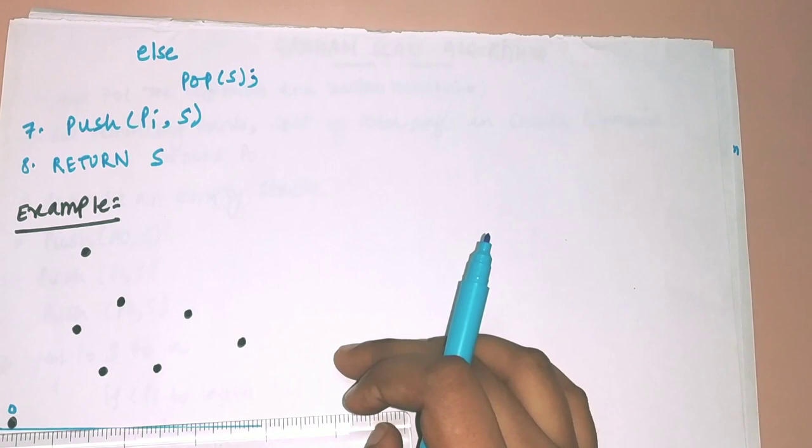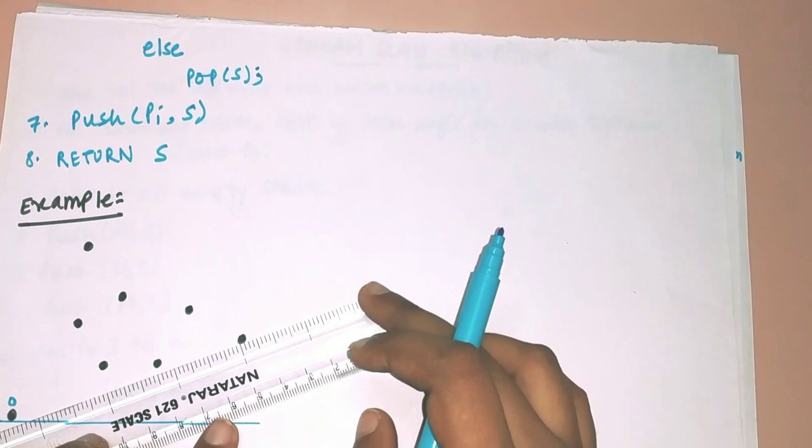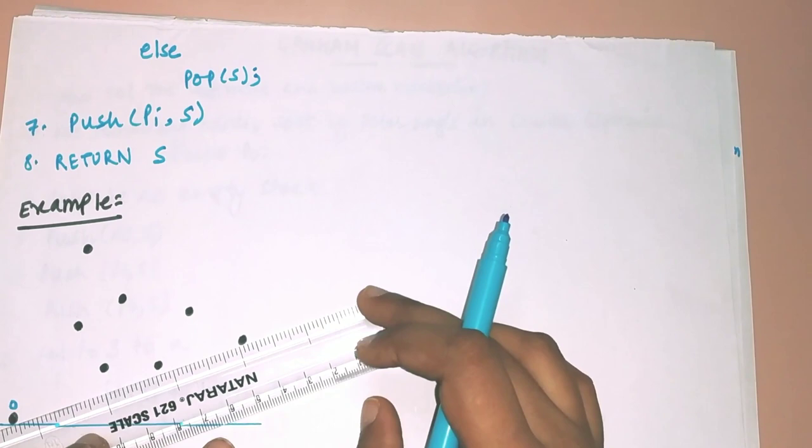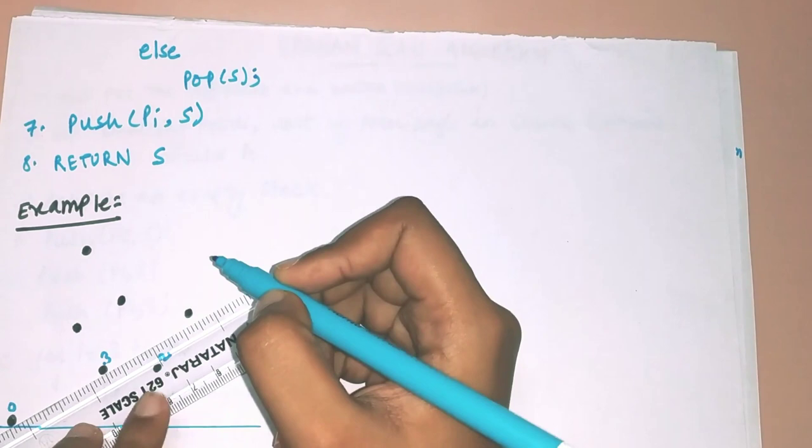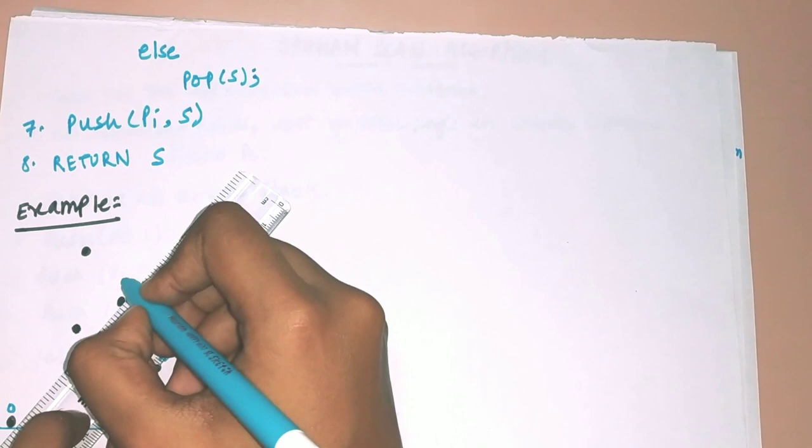We draw an x-axis along p0 and make that point our origin. For step 2, we sort the remaining points by polar angle in counterclockwise direction. Place a ruler along the x-axis at p0 and rotate it counterclockwise. The point with the lowest angle becomes p1, then p2, then rotating further gives p3, p4, p5, p6, and the point with the largest angle becomes p7.